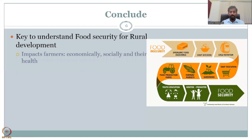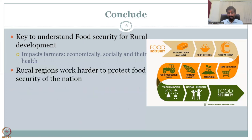Key to understanding food security for rural development is the impact on farmers — socially, economically, and their health — because they have to eat healthy nutritious food to produce nutritious food. If farmers are weak, they cannot put time and energy in the field to bring food to you. Rural regions work the hardest to protect the food security of the nation. If farmers stop producing food, we will have to go to other countries and ask for food, which doesn't look good on the international scale.